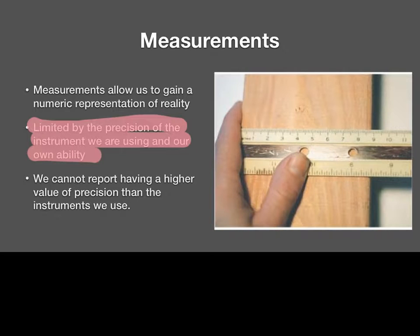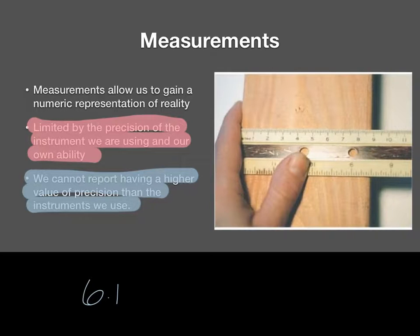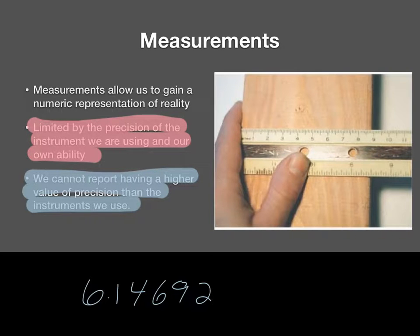One thing that we cannot do is report having a higher value of precision than the instruments that we use. I get this a lot because students like to be fancy and they'll give you whatever their calculator spits out — 6.14692, and so on. In reality, we can't get to that level of precision if you're just multiplying something times pi or something like that.